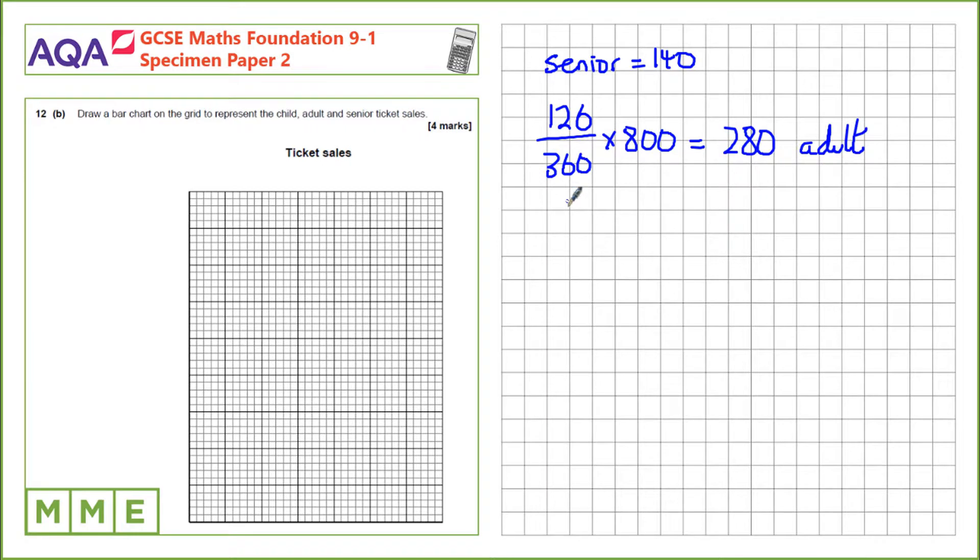Same for the child tickets. We can either find 171 over 360 and then multiply by 800 again, or we can take these two away from the 800 total sales. Either way, we get 380 child tickets.